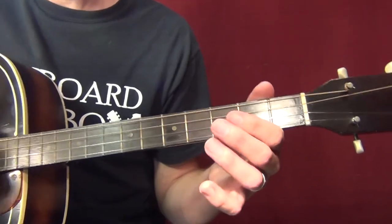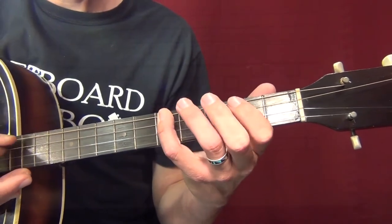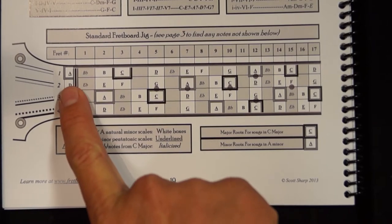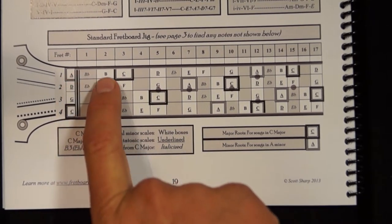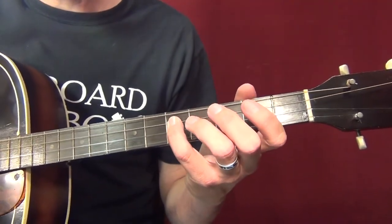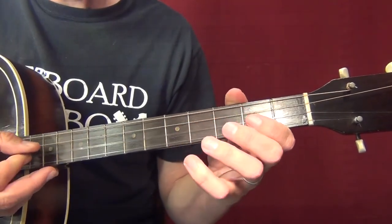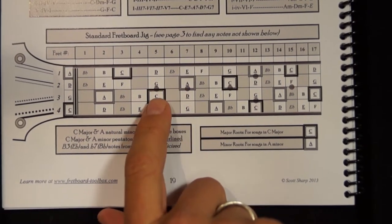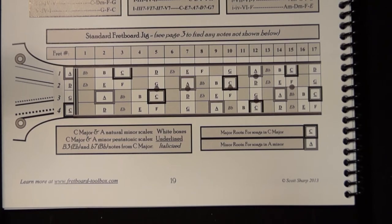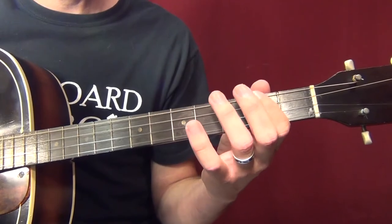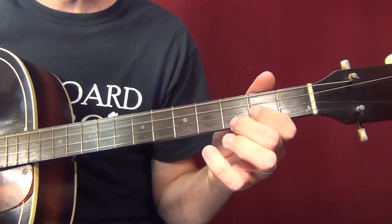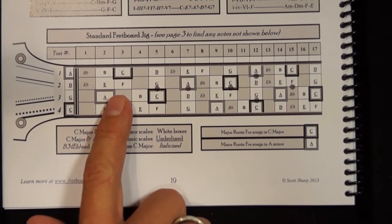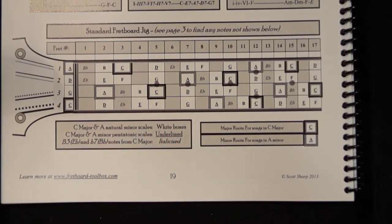On a tenor guitar — and on a mandola or tenor banjo it's the same — that scale looks like: C, D, E, F, G, A, B, C. You can also start from the C note on the third string fifth fret and play up from there. Being able to see those notes is huge because you can pick out so many melodies from them. Just by messing around with the order of the notes you can pick out little melodies. Noodling around with notes in the key is great practice.